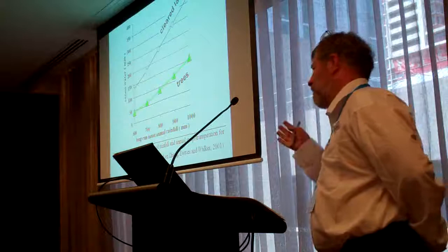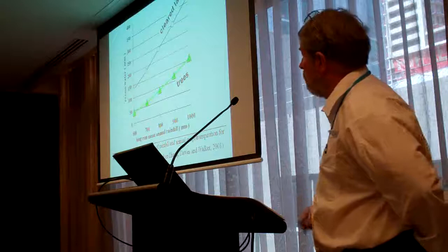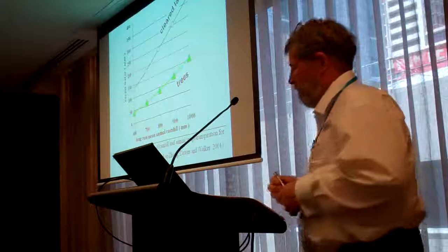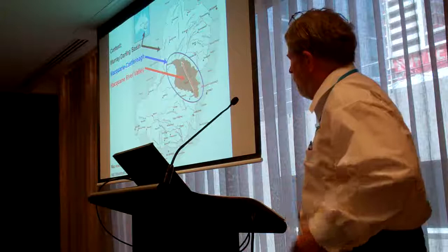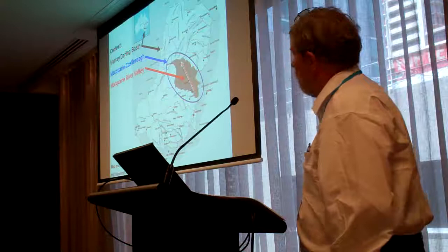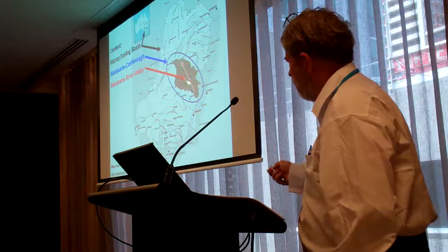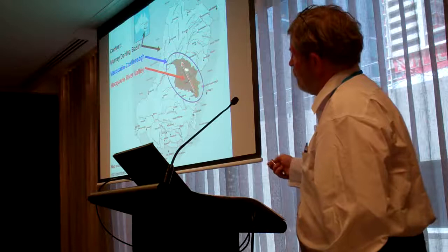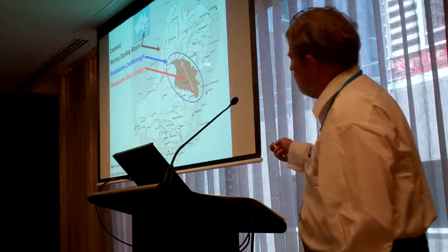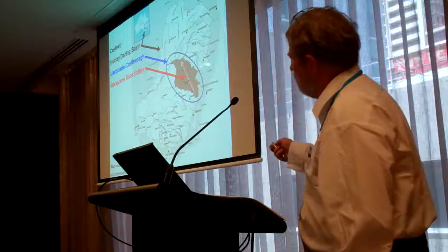We expect a lot more water in the river from cleared land, annual crops, or annual pastures than we do with a tree plantation. The area we're talking about is the Macquarie-Hedgeman in the Murray-Darling Basin — in particular the Macquarie River Valley. That's the Macquarie River there, where the water flows from the southeast and northwest, and it ends up in the Murray River. Some of it ends up there, but most of it goes out in evapotranspiration before it even gets to the river.